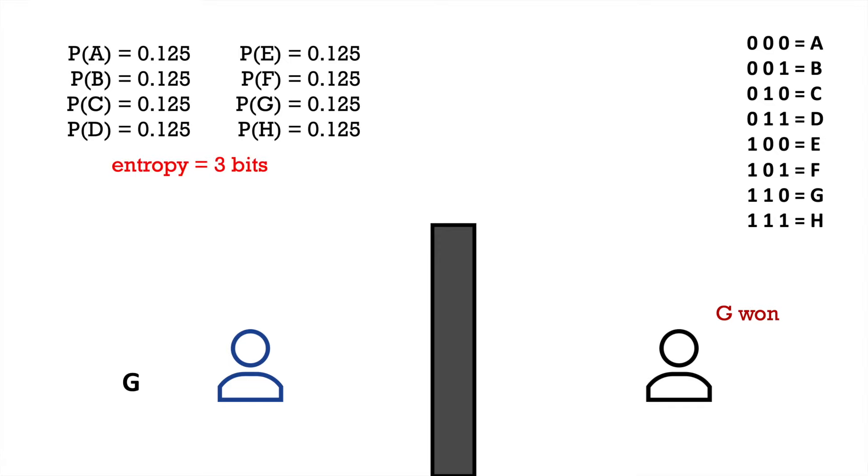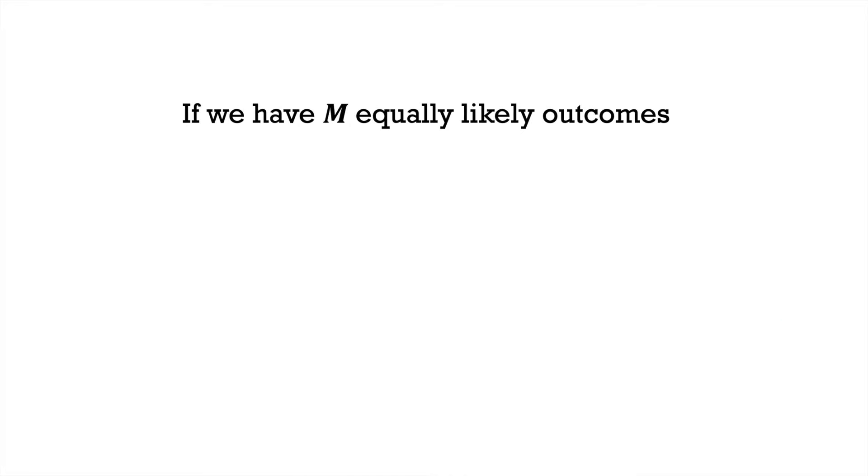Hopefully, we can see that this argument could generalize further to distributions with different number of outcomes. In fact, for a uniform distribution with m possible outcomes, we could write the number of bits required as log base 2 of m. For powers of 2, this is trivial to see. Log base 2 of 2 to the n is n and n bits allows us to encode 2 to the n different states showing us that this formula works.